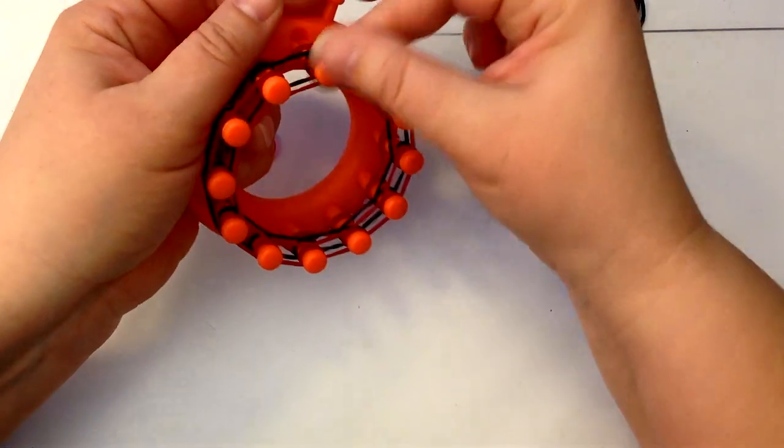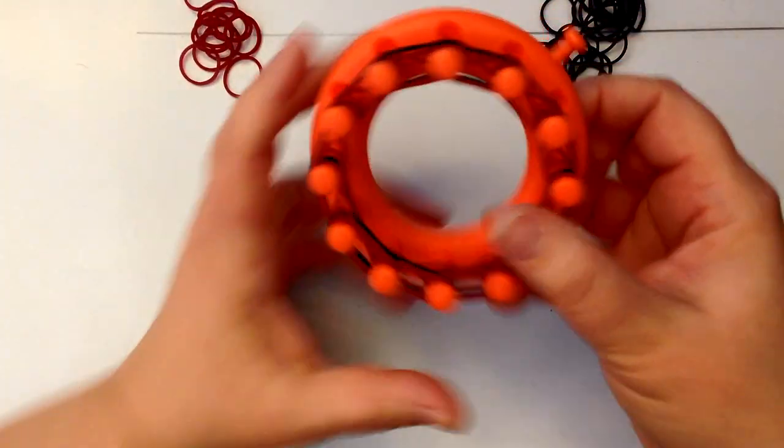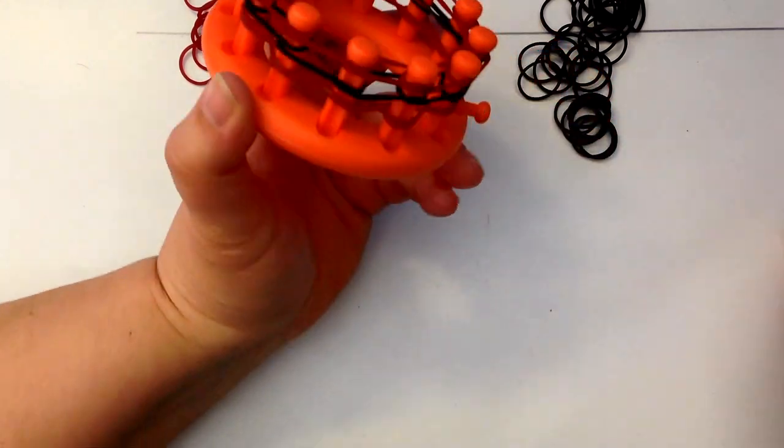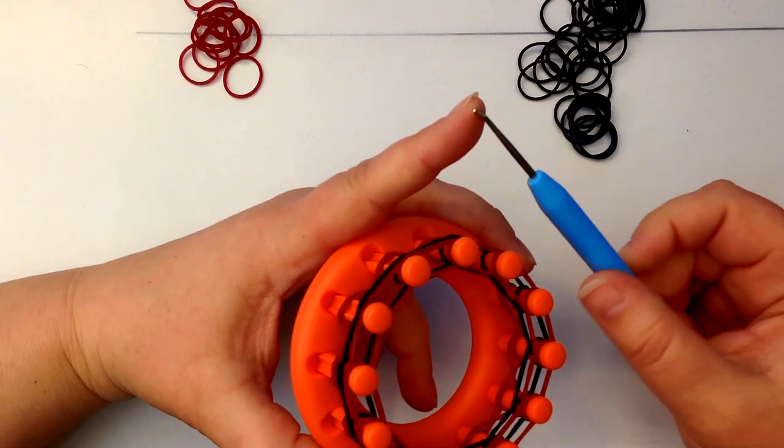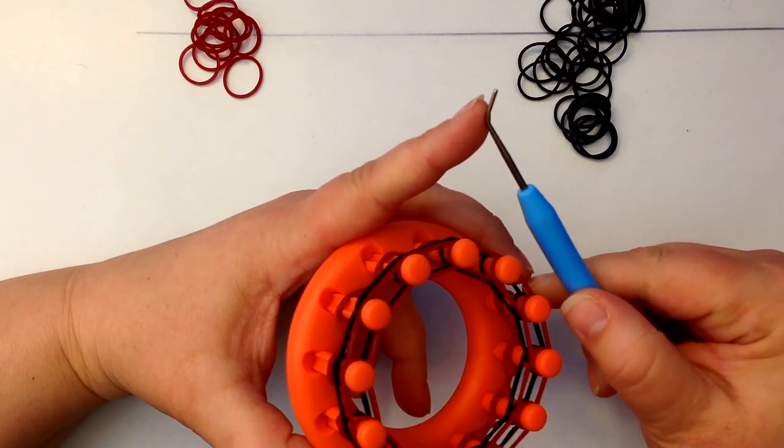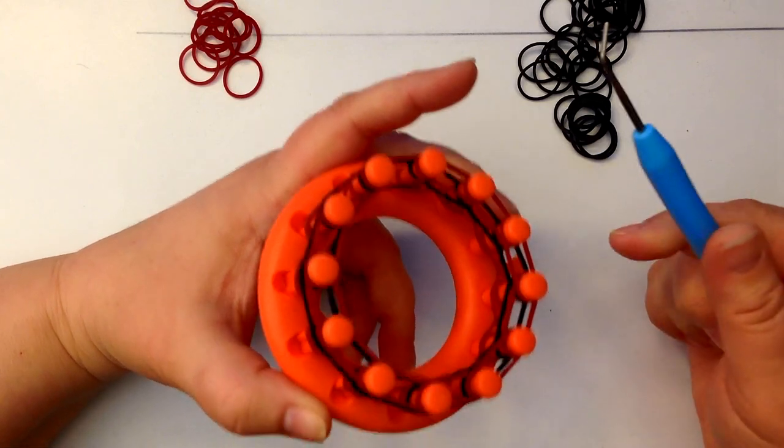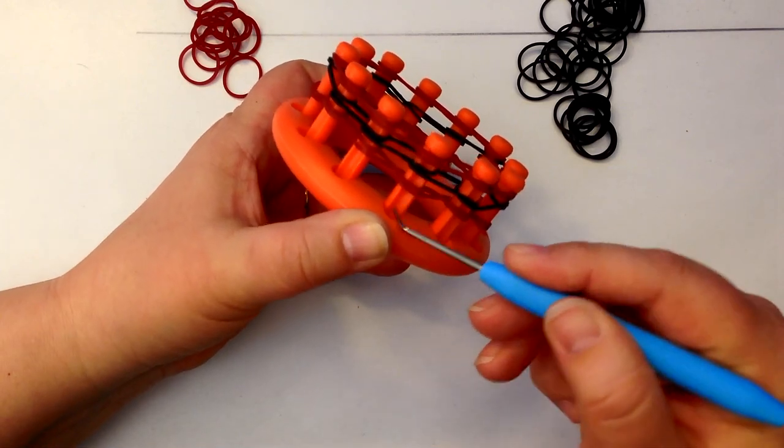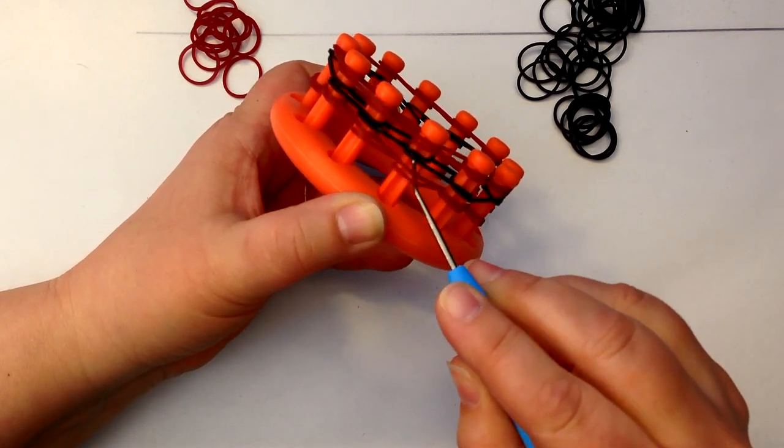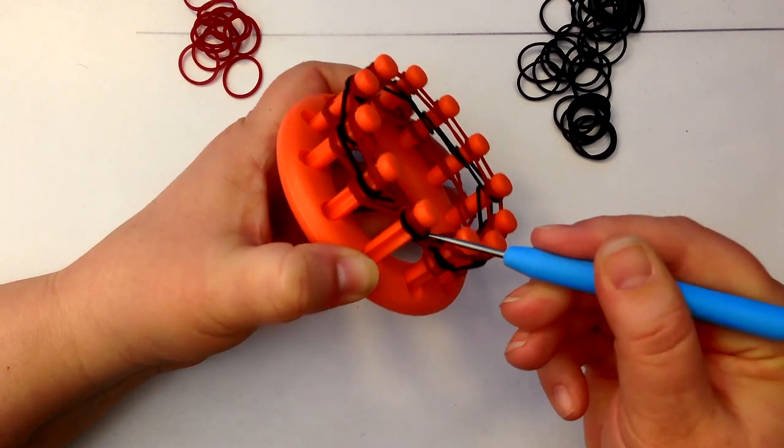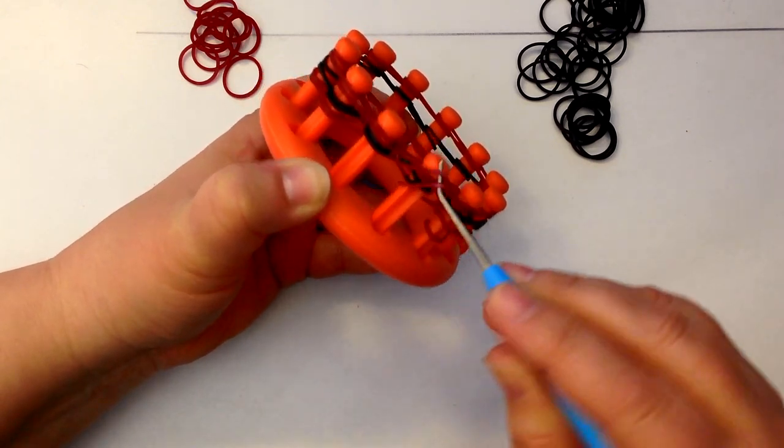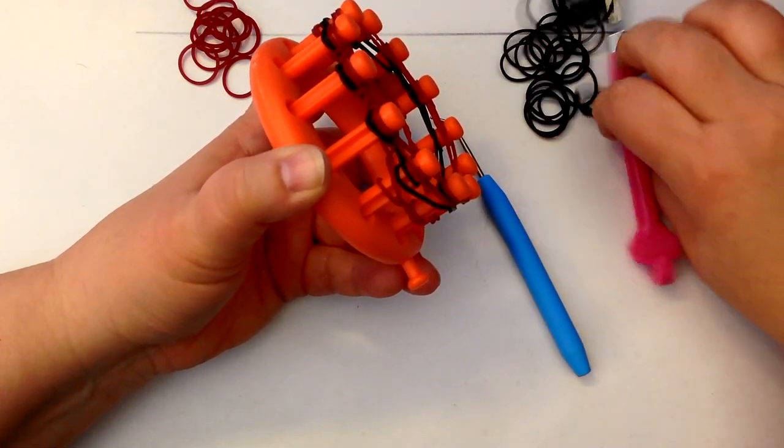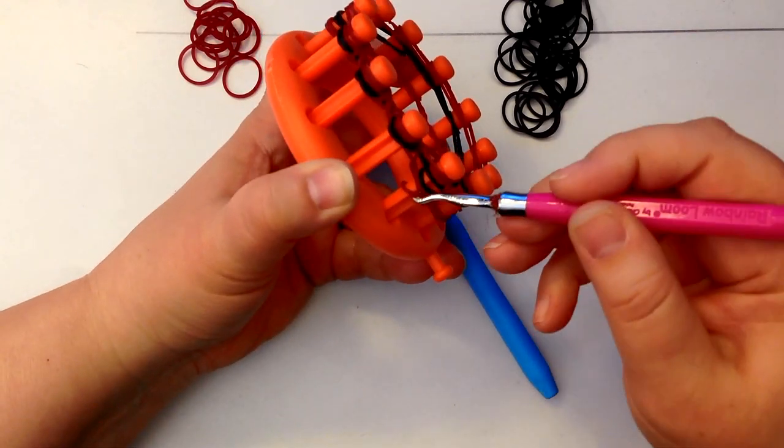Place your bands on just like you would if you were doing something on your finger loom or on your monster tail. Now, one of the things they give you when you buy the kit is this sort of pointy device. This is what you can use to push under this little lip. You've got this indent here, and you push your hook under and lift those bottom two bands up and over. It works quite well.